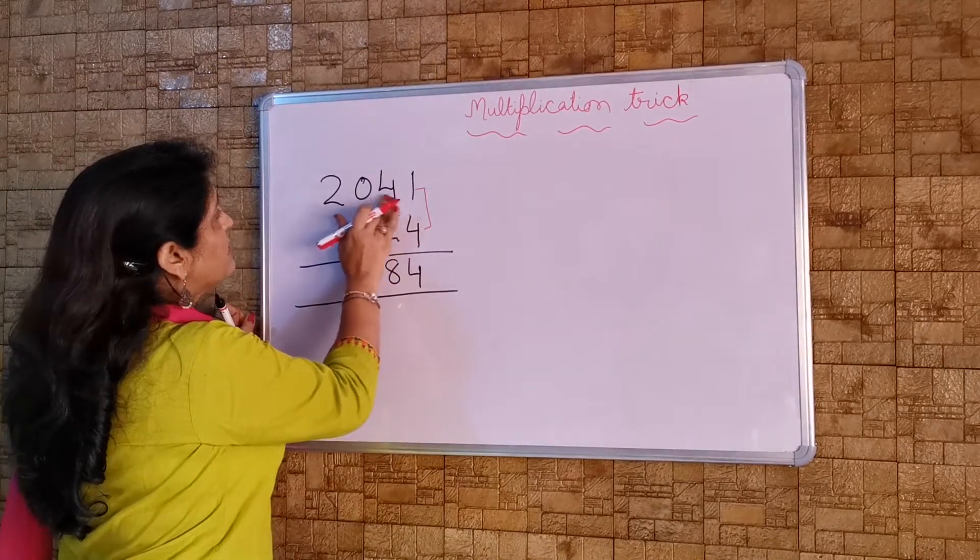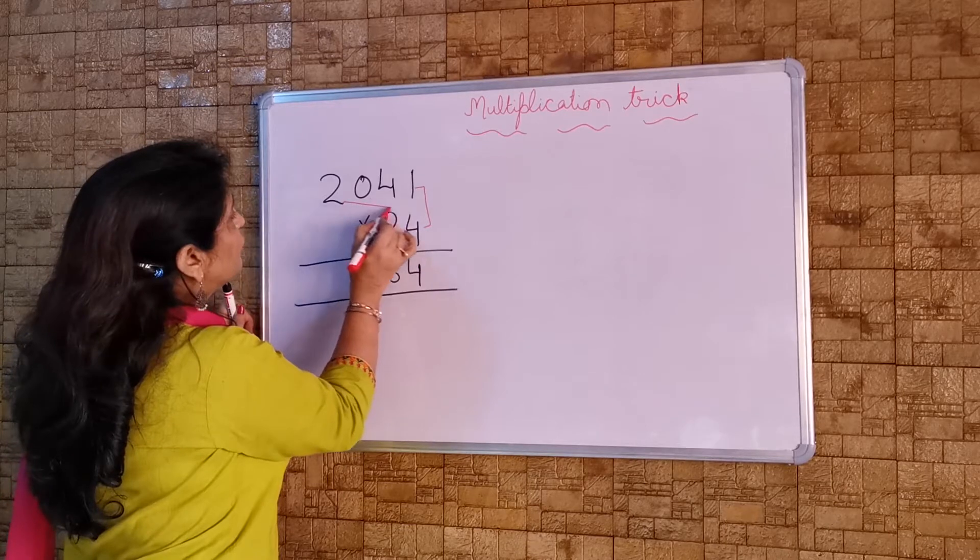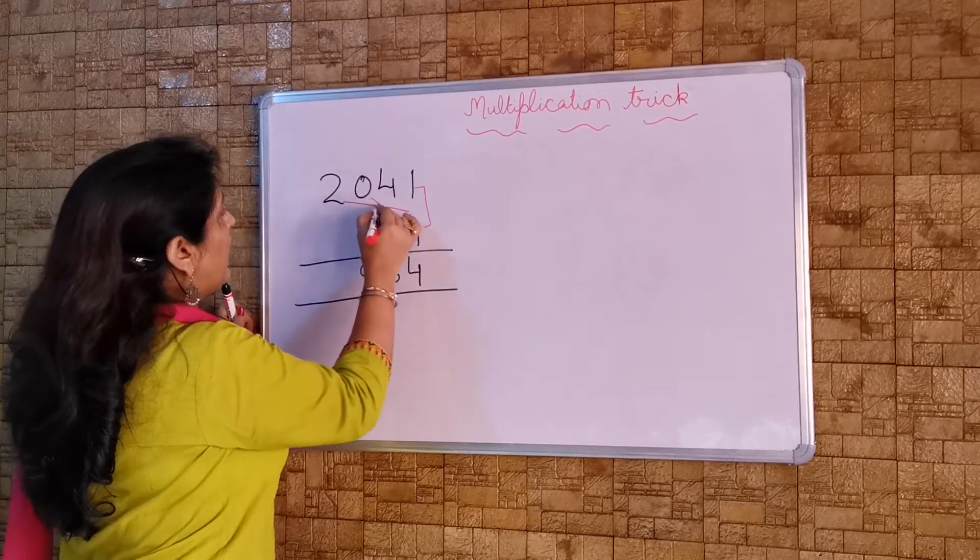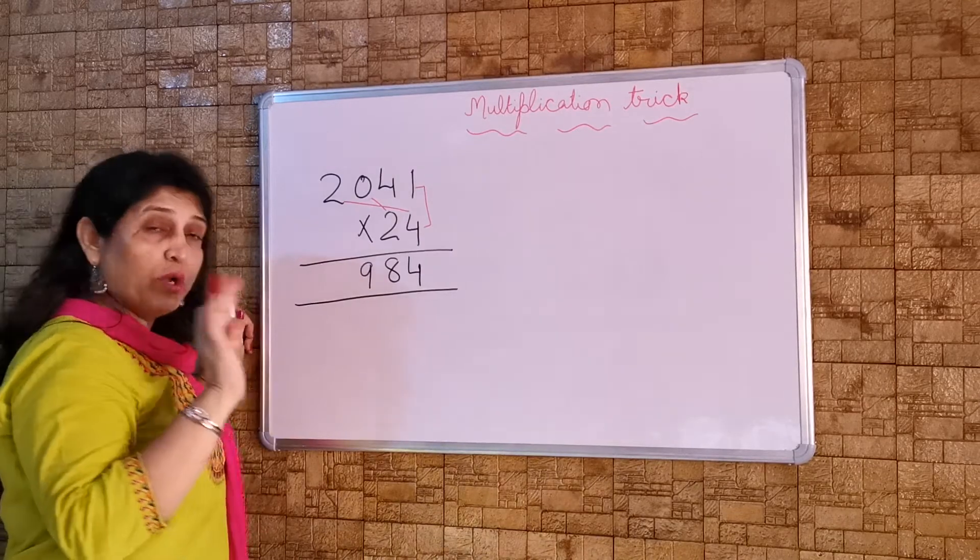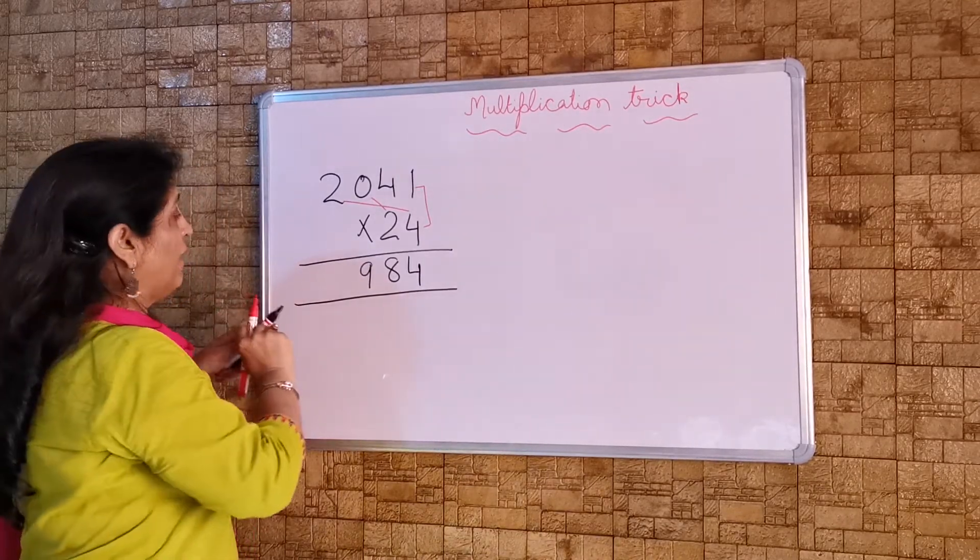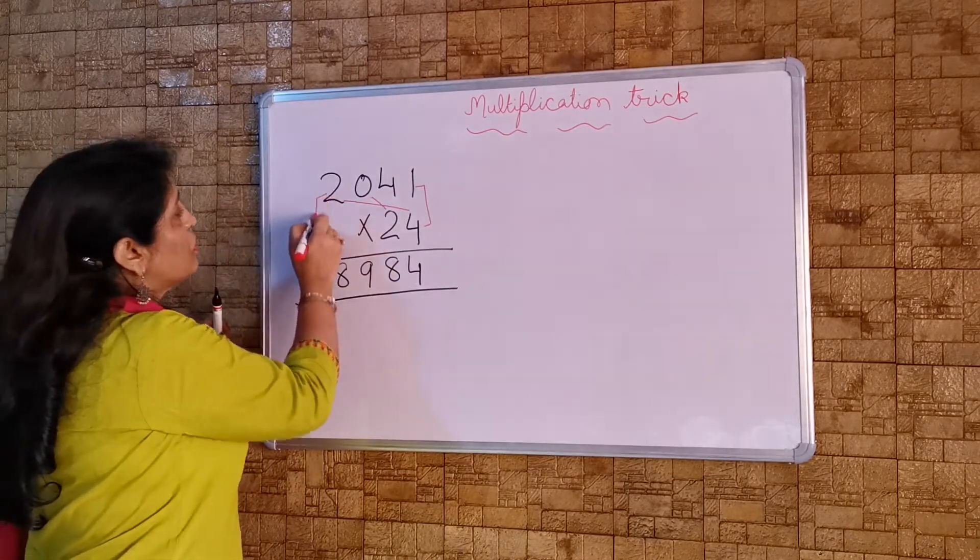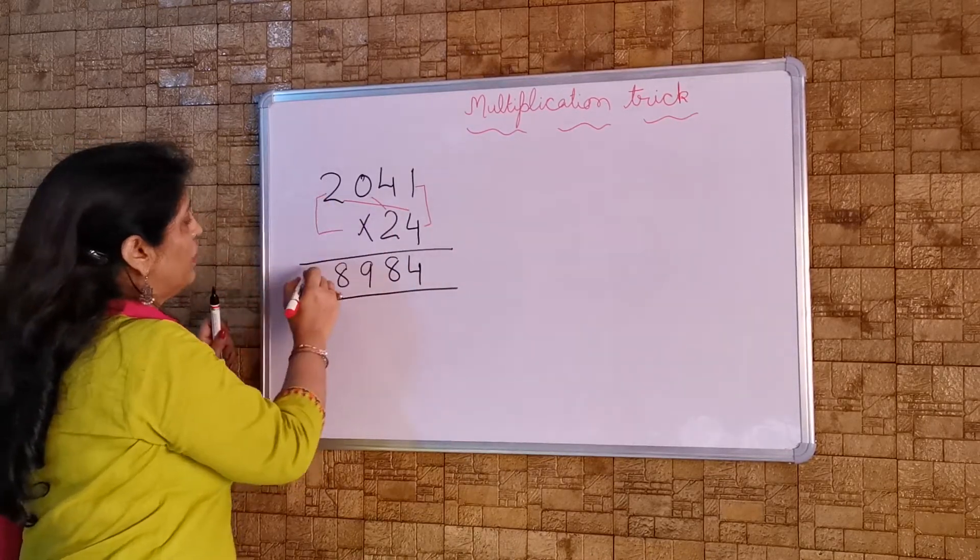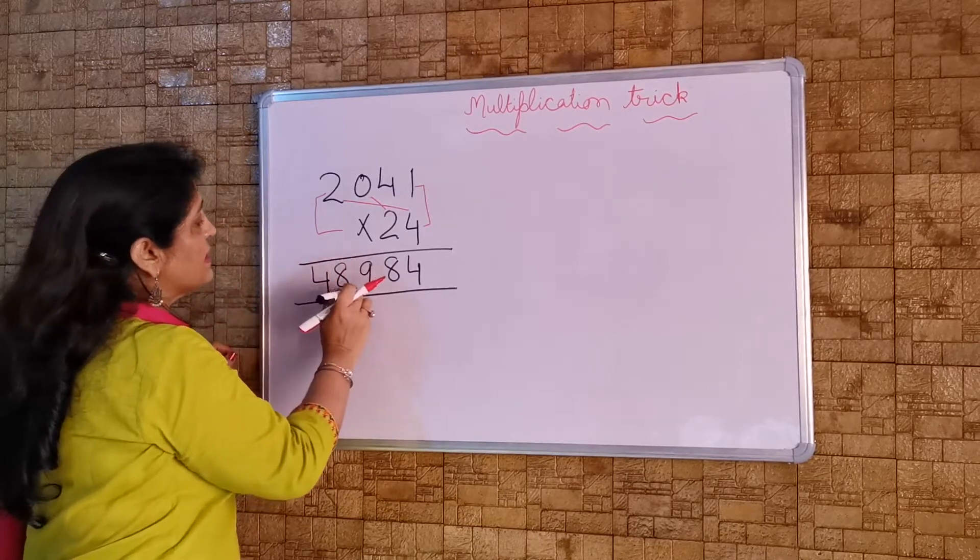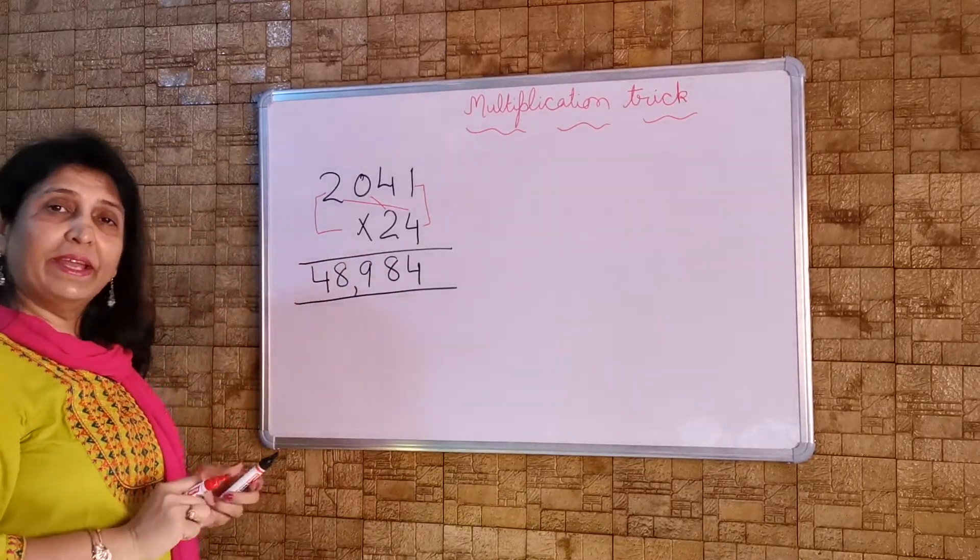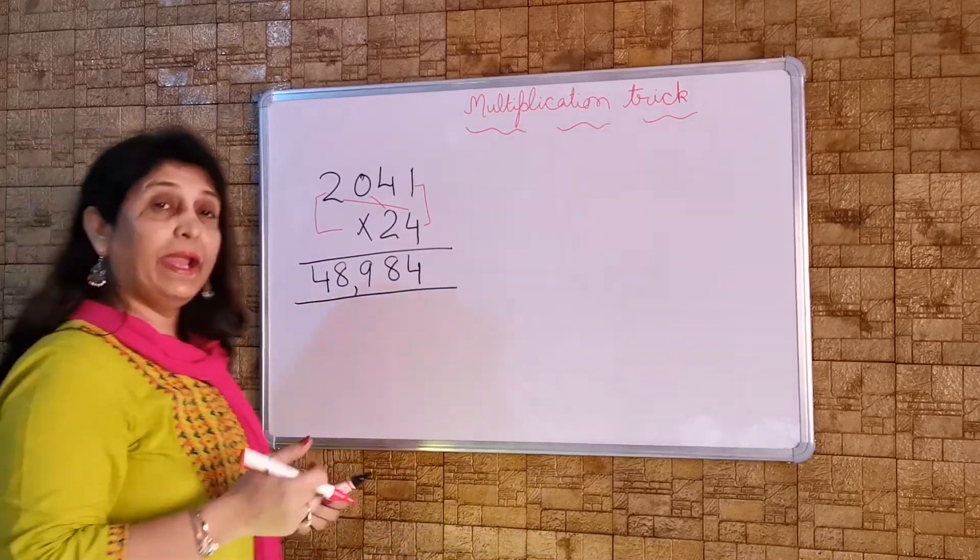I will take these numbers forward and 4 times 2 is 8 and 2 times 0 is 0. And no carry forward. So 8 will come as it is. And the last step is 2 multiplied by 2. It becomes 4. So now the answer is 48,984. So you can check it by doing the column method also.